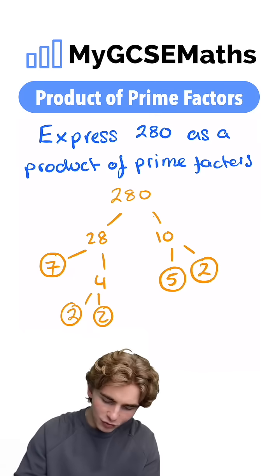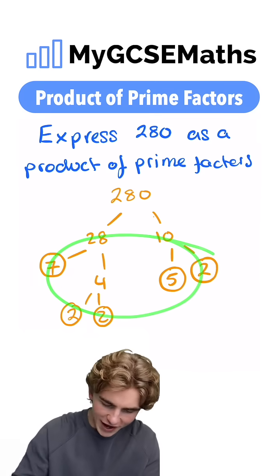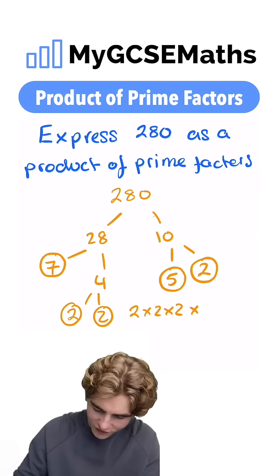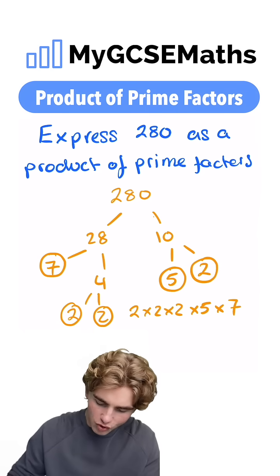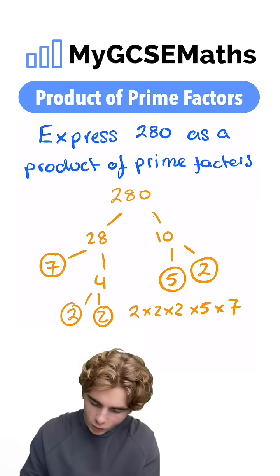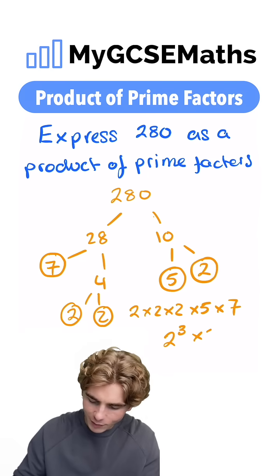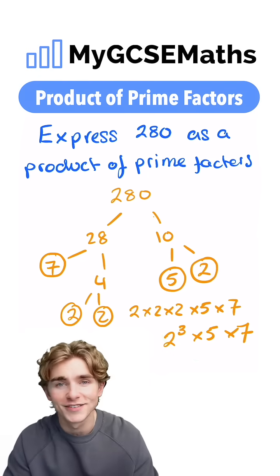Now, all we're going to need to do is multiply our circled numbers together. We have three 2s, so we have 2 times 2 times 2. We have a 5, so times 5, and a 7, so times 7. To write this in index form, we could write this as 2 cubed times 5 times 7. That is going to be our answer.